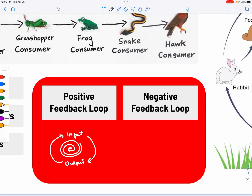Negative feedback is a regulating mechanism, just like our body temperature — if it gets too hot, we sweat. It's about regulation. It's difficult to maintain a negative feedback loop because energy is required. Our body is a good example of a negative feedback loop.